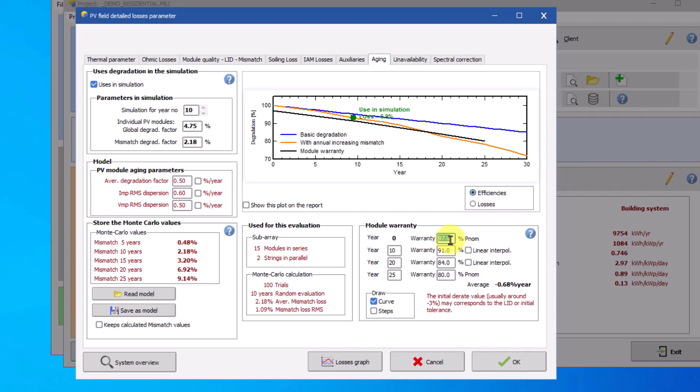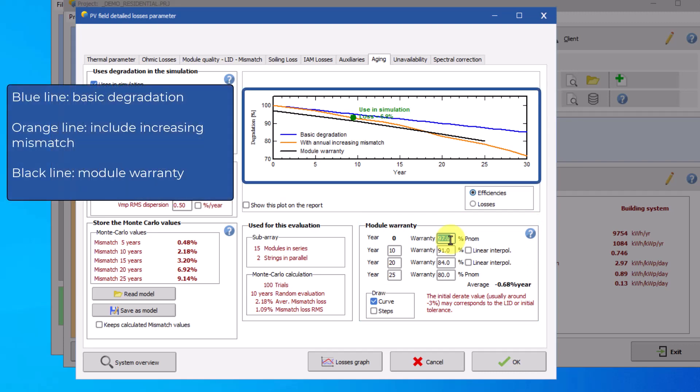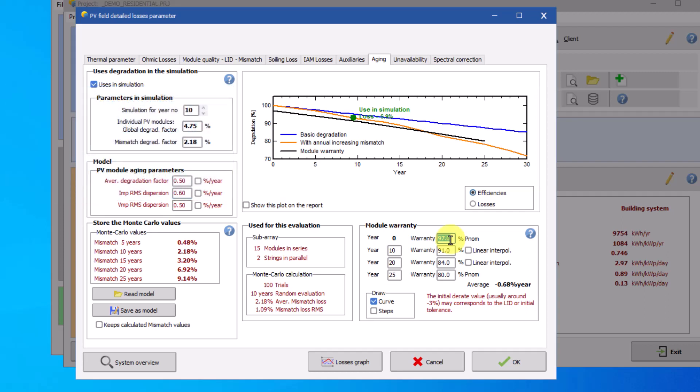These different factors are displayed in the graph on the top right. The basic degradation is represented with the blue line, and the orange line is included in the increasing mismatch losses. The module warranty is then represented with the black line in the graph. The black curve should be below the blue curve due to safety margins. You can choose to represent the evolution of this value with a curve or in steps.